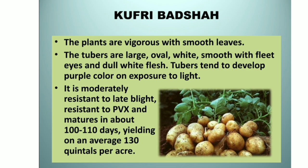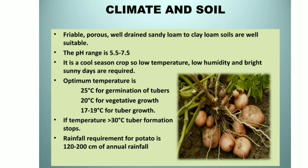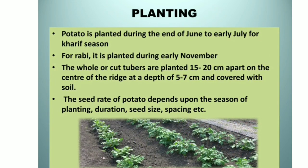Climate and soil: friable, porous, well-drained sandy loam to clay loam soils are well suitable. The pH range is 5.5 to 7.5. It is a cool season crop, so low temperature, low humidity and bright sunny days are required. Optimum temperature is 25°C for germination of tubers, 20°C for vegetative growth, and 17 to 19°C for tuber growth. If temperature is greater than 30°C, tuber formation stops. Rainfall requirement is 120 to 200 cm of annual rainfall.